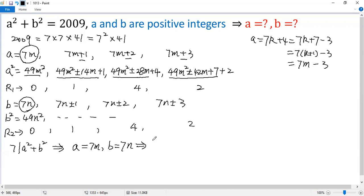So a squared, 49m squared, plus b squared, 49n squared, equals 2009, which is 7 squared times 41. So both sides divided by 49.